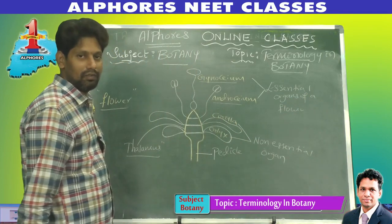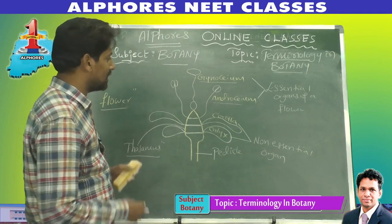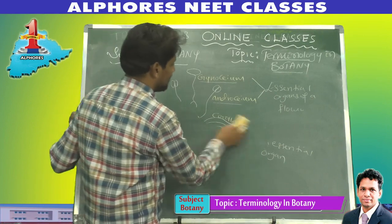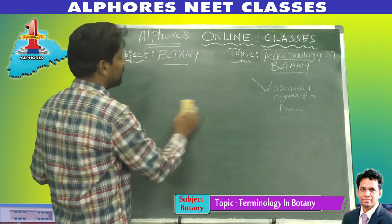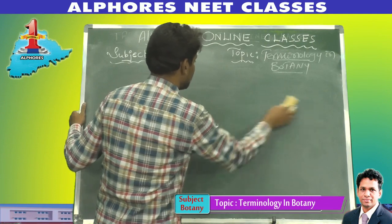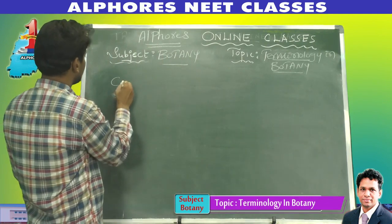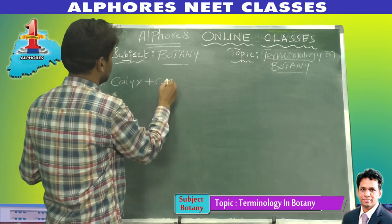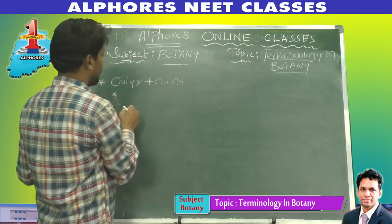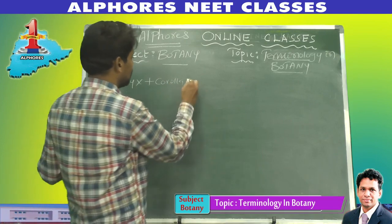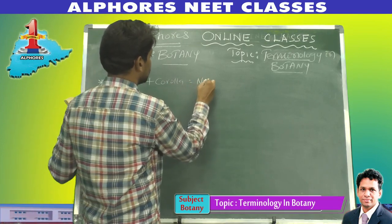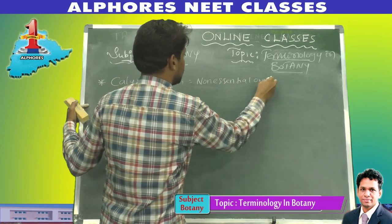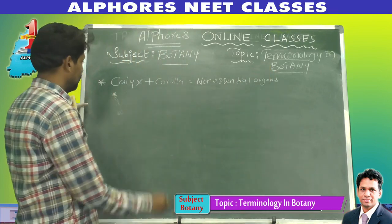Since androecium and gynoecium produce the gametes for fertilization, they are directly involved in sexual reproduction. That is why androecium and gynoecium together are called the essential organs of a flower. Non-essential organs are calyx and corolla; essential organs are androecium and gynoecium.